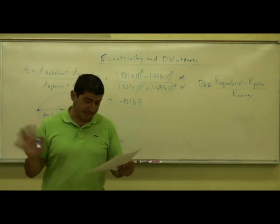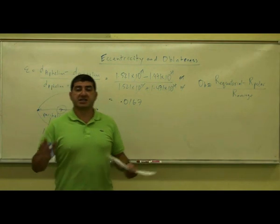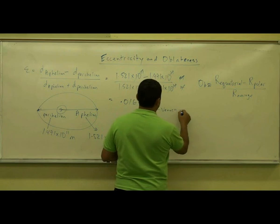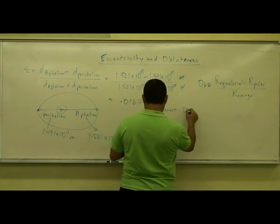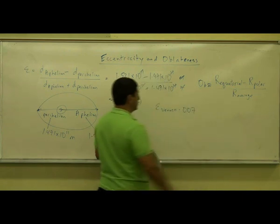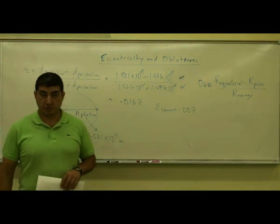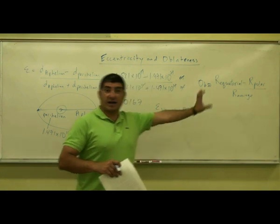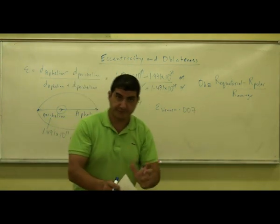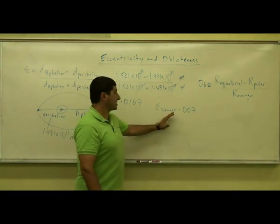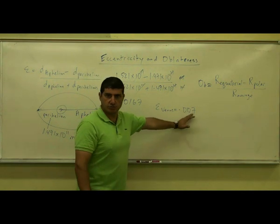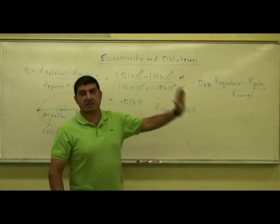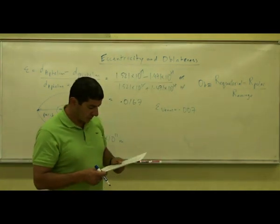Out of the planets, Venus has the most circular orbit — its eccentricity is 0.007, very, very circular. We also saw that the oblateness of Venus is very low, meaning it's very spherical. So both its orbit and the planet itself are very circular.